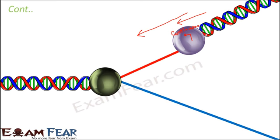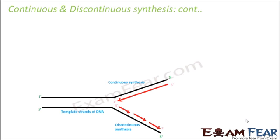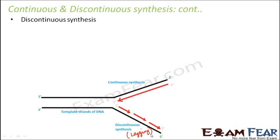Now we need to understand how DNA polymerase will create a new strand on the lagging strand, which involves discontinuous synthesis. Discontinuous synthesis is more complicated. Initially, it was assumed that continuous synthesis took place on both strands, but scientist Okazaki recognized that since the two strands of DNA are anti-parallel, continuous synthesis cannot take place on both strands.